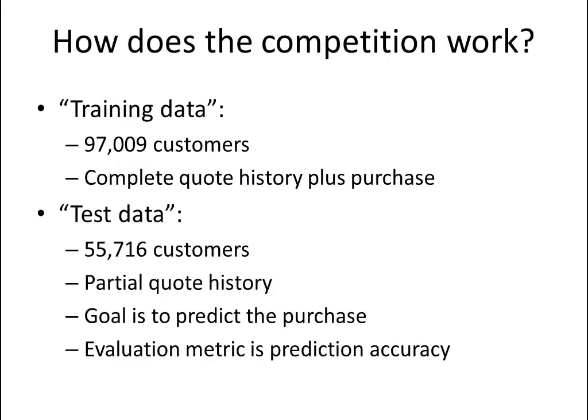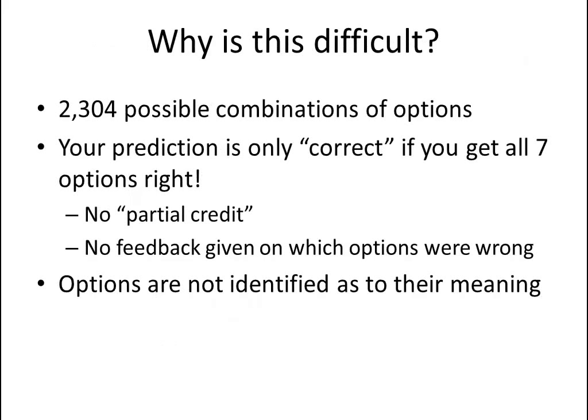Let's talk about the competition and how it actually works. We have access to some training data, which is 97,000 customers and their complete quote history including what they purchased. And then we've got the test data, which is 55,000 customers with a partial quote history, and our goal is to predict what they purchased. The evaluation metric is prediction accuracy. Why is this difficult? For one, there are over 2,000 possible combinations of options. Importantly, your prediction is only counted as correct if you get all seven options right — there's no partial credit and no feedback given on which options you get wrong.